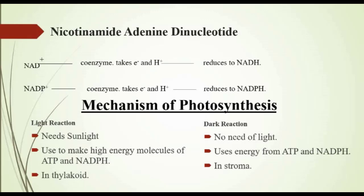Now, mechanism of photosynthesis, page 121. It occurs in two phases: light reaction and dark reaction. During the first phase, light energy is captured and is used to make high-energy molecules ATP and NADPH. These reactions are known as light reactions and take place on the thylakoid membranes of chloroplast. During the second phase, carbon dioxide is reduced to make glucose. In this phase, the energy from ATP and NADPH is utilized. Since these reactions do not use direct sunlight, they are known as dark reactions, and they take place in the stroma of the chloroplast.